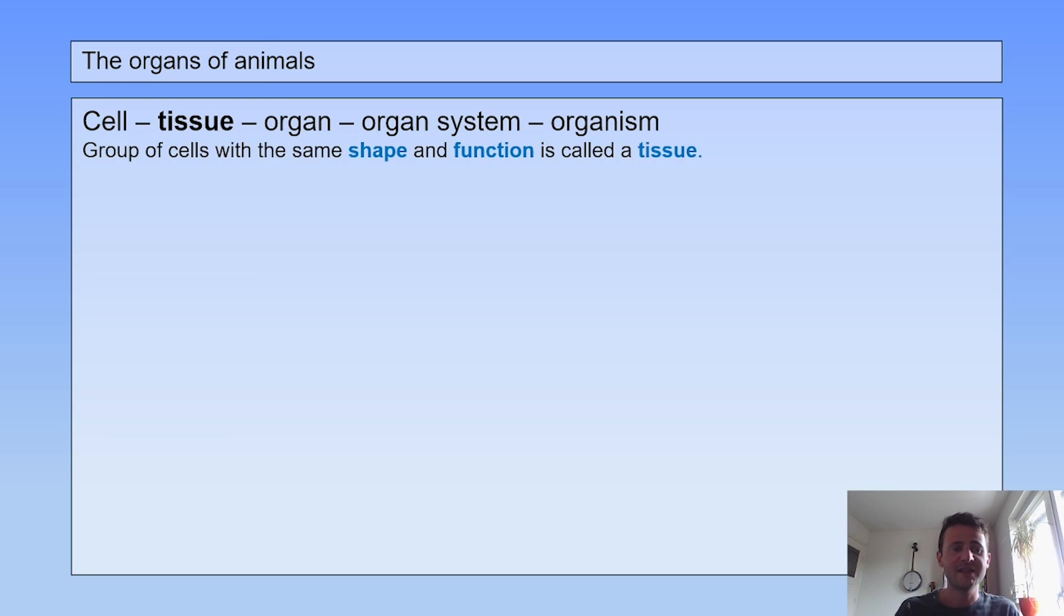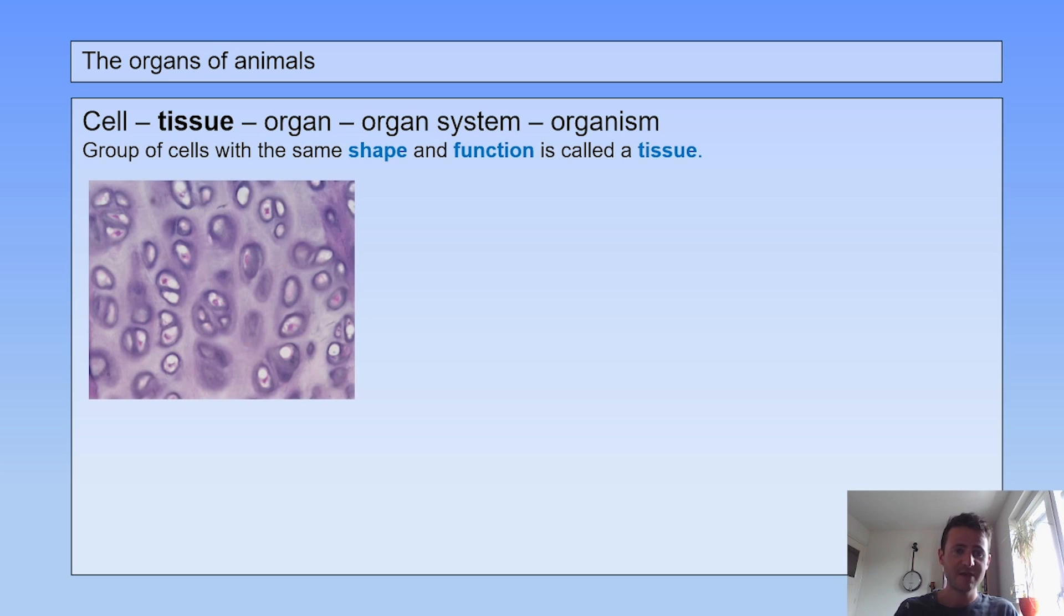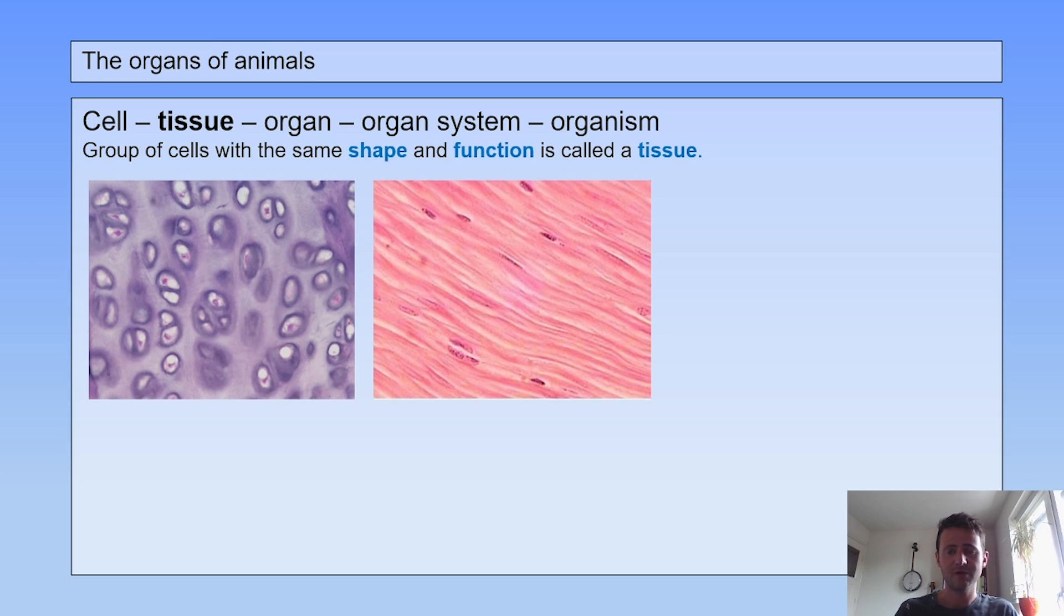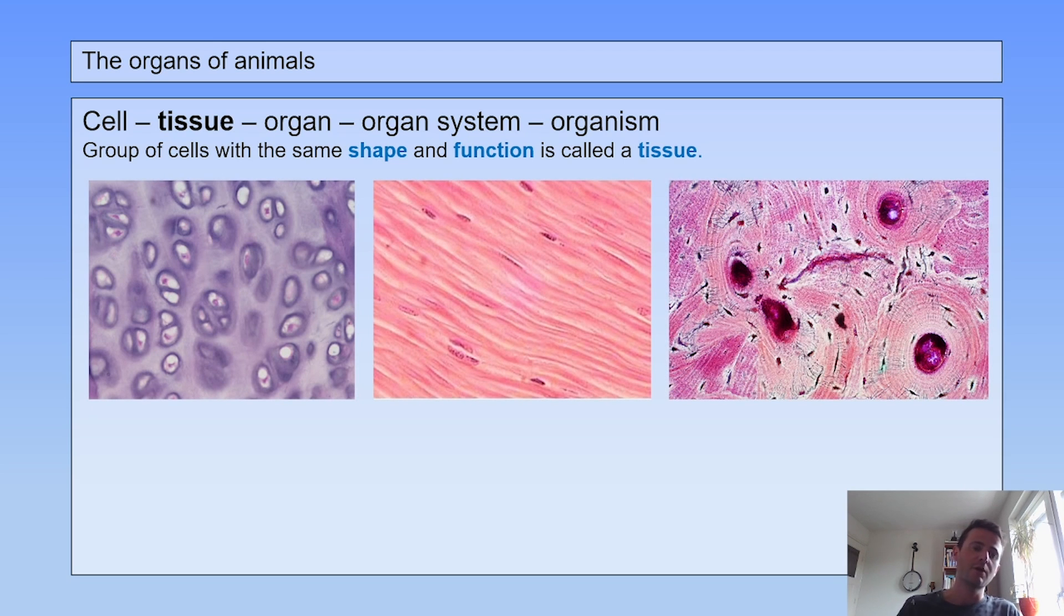In the next level you will have the tissues. A group of cells with the same shape and function is called a tissue. This is one cartilage cell, but if you have a group together and they all have the same shape and function, it's called a tissue.